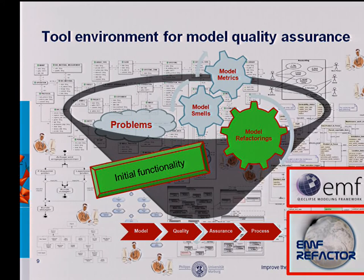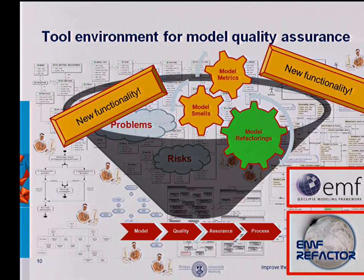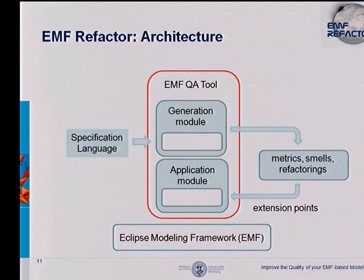As you see on the name, the initial functionality of EMF Refactor was to perform model refactorings on EMF-based models. The new functionality will also be to calculate model metrics and to identify model smells in the model, integrating all these techniques. Each tool mainly consists of two different modules: the application module for calculating metrics and running refactorings. The application module uses the metrics, smells, and refactorings plug-ins, which can be plugged in to your Eclipse application using well-defined extension points and interfaces. These plug-ins may be generated by the second module, the generation module of the quality assurance tool.